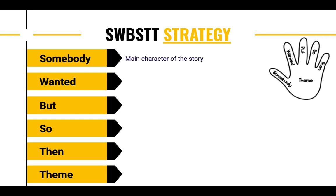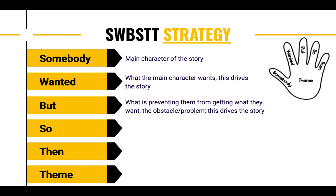When I say somebody, I'm just talking about the main character of the story — who does the story revolve around? Wanted is basically what it says: what the main character wants. This drives the story. Their desires, something that they're trying to achieve or get, is what gives us the action — everything else happens because of what they want. But is what is preventing them from getting what they want: the obstacle or problem. This also drives the story because it's going to drive them to try something new in order to achieve what they want. Both of those are what drive the plot of the story.